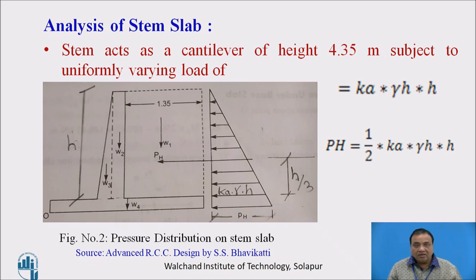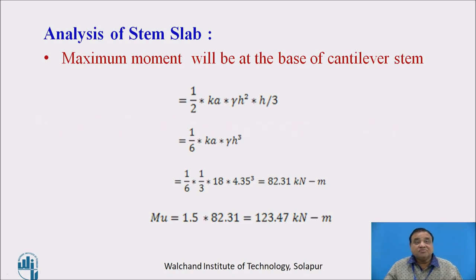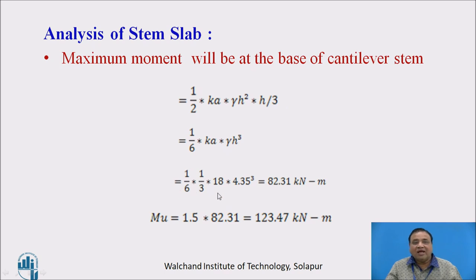After determining the pressure at the base, we find the maximum bending moment. The maximum bending moment occurs at the base of the cantilever stem, given by half k gamma h squared times h by 3 — that is, pH into h by 3 — which simplifies to one-sixth of k gamma h cubed.